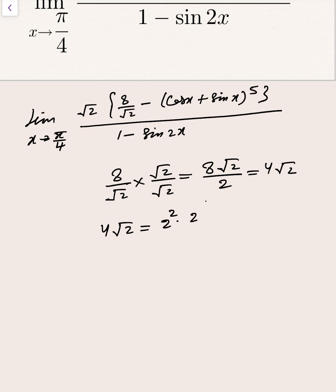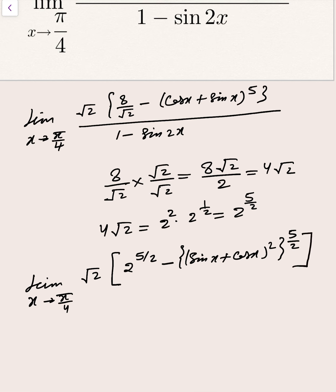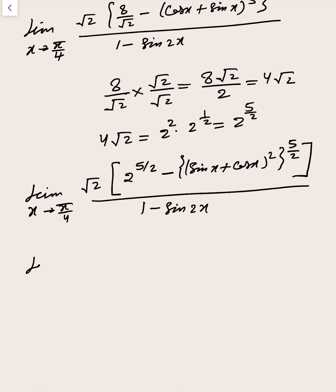And 4 root 2 that one is written 2 to power 2 into that is 2 to power 5 by 2. So basically limit x tends to pi by 4, here root 2 that one is written as 2 to power 5 by 2 minus. So that one is written as sin x plus cos x to whole square to whole power 5 by 2, divided by 1 minus sin 2x.